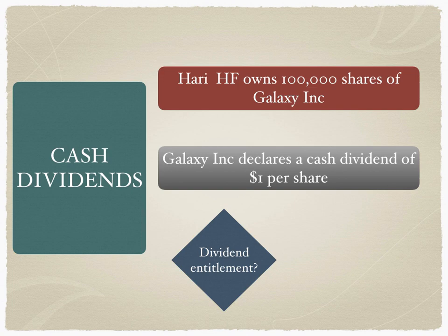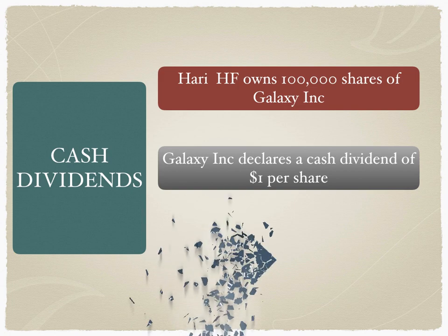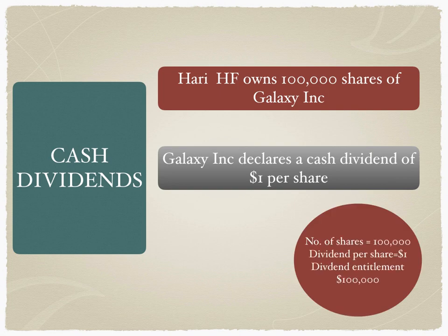Since this is not a mandatory with choice scenario, the dividend entitlement is calculated very simply. There is no mention of the face value or par value of Galaxy Inc.; the hedge fund is going to receive dividends as a dollar number per share. The number of shares is 100,000; the dividend per share is $1. Therefore, the dividend entitlement is $100,000. This is a very simplistic calculation with no mention of par value.